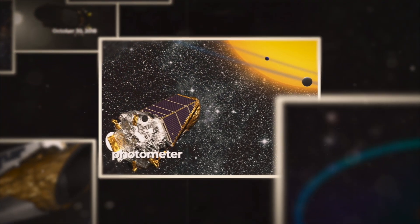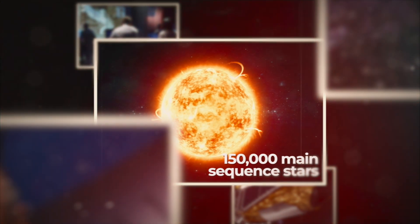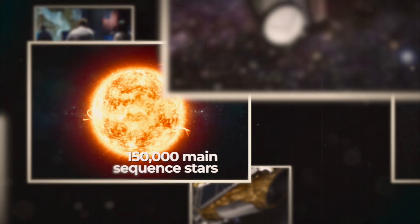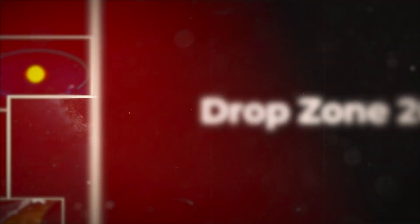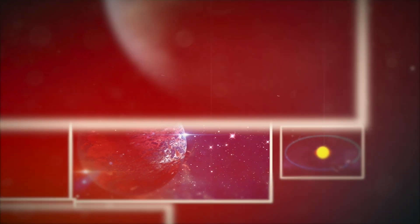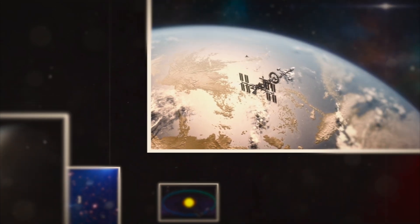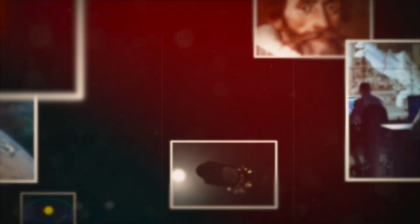Kepler's sole scientific instrument was a photometer that continuously monitored the brightness of approximately 150,000 main-sequence stars in a fixed field of view. Its goal was to explore a region of the Milky Way to discover Earth-sized exoplanets in or near habitable zones and determine how many of the Milky Way's billions of stars have such planets. These data were sent to Earth, where they were analyzed to see if there was any periodic dimming caused by exoplanets passing in front of their home star.